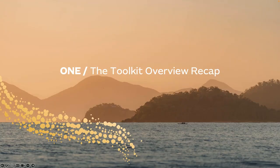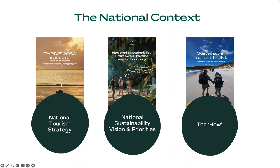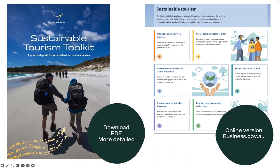Just a quick recap of the toolkit: the National Sustainability Framework for the visitor economy and the Sustainable Tourism Toolkit is a key deliverable of Australia's national tourism strategy, Thrive 2030. The toolkit is the 'how' — showing tourism operators how to implement sustainable tourism practices in their business. It comes in two versions: a downloadable PDF version which is detailed and comprehensive, and an online version which is a shorter, bite-sized version. Bec will be putting links to both in the chat.